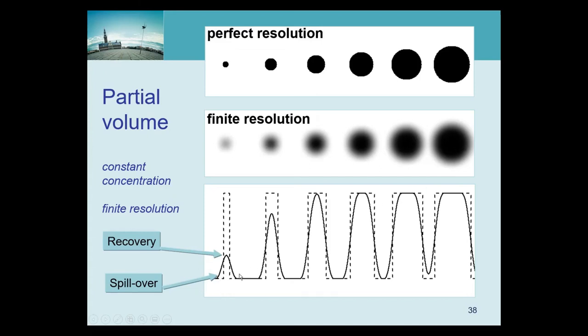There are also other terms like spillin, which is the same thing, but if I would not be interested in that object, but in the background, then I would call it spillin, because now it's activity that I didn't want to see that I get from background. So lots of terms, I think it's good to keep the physics in mind, because then you can easily understand all these terms.